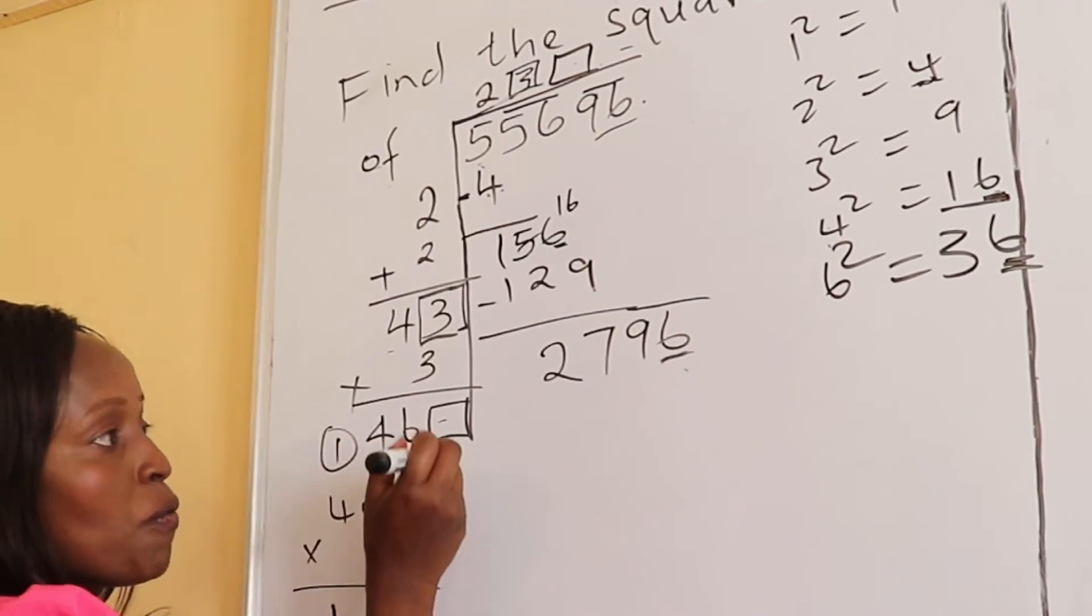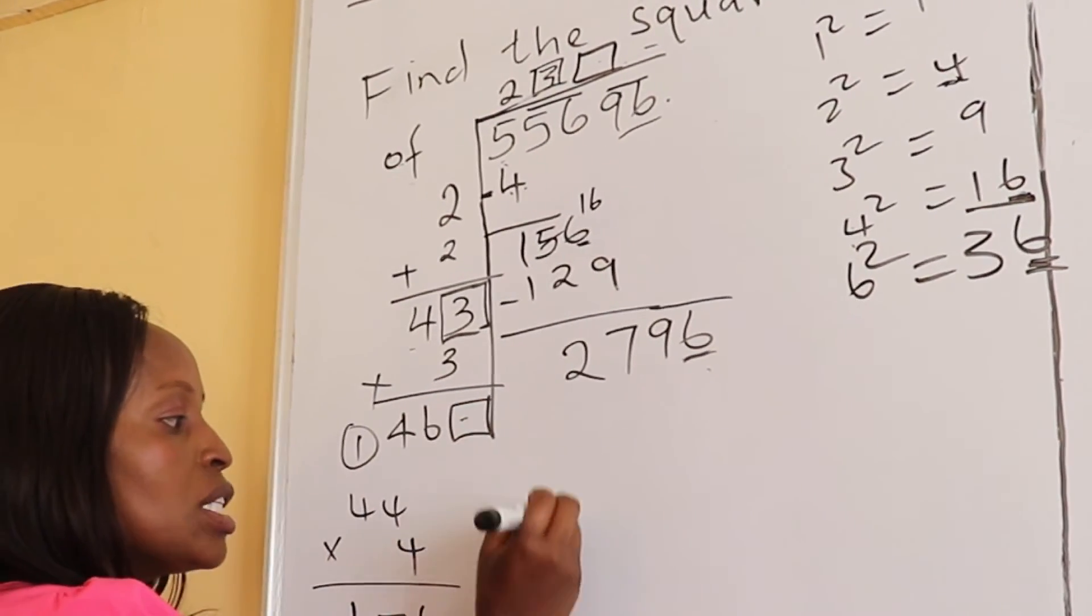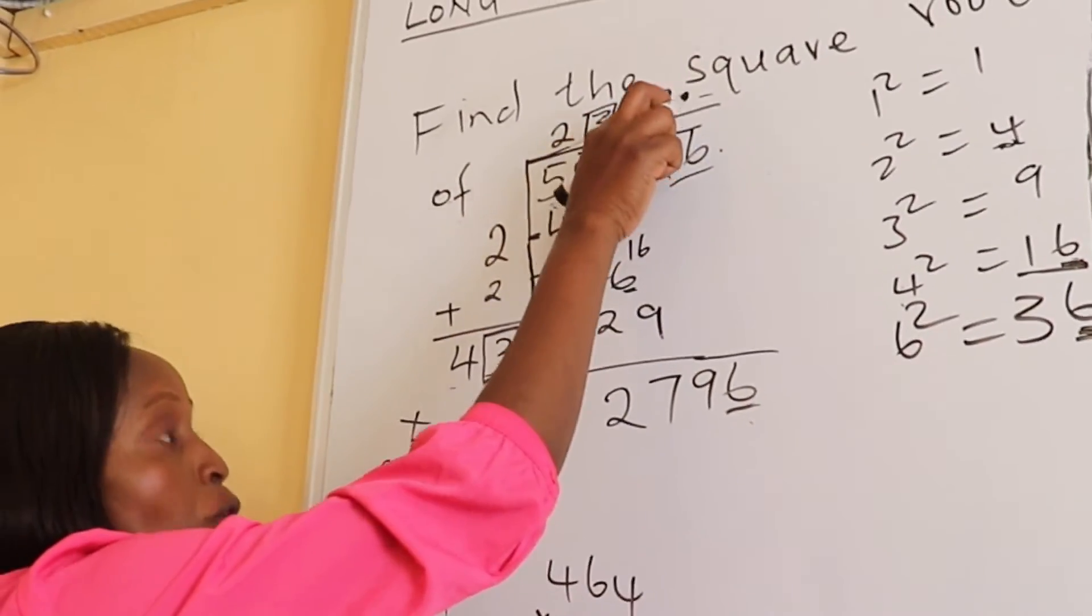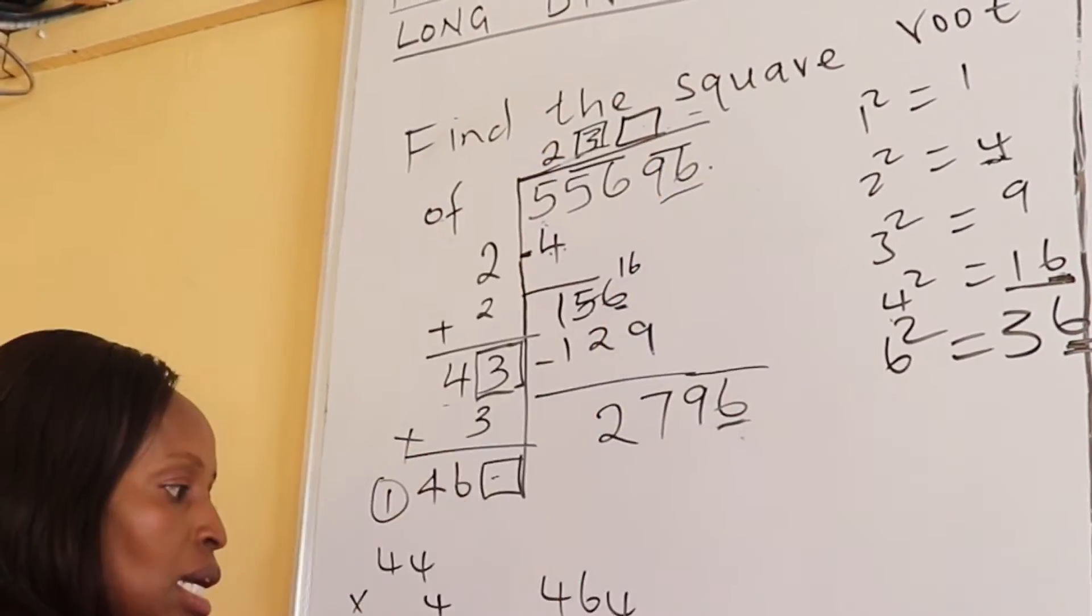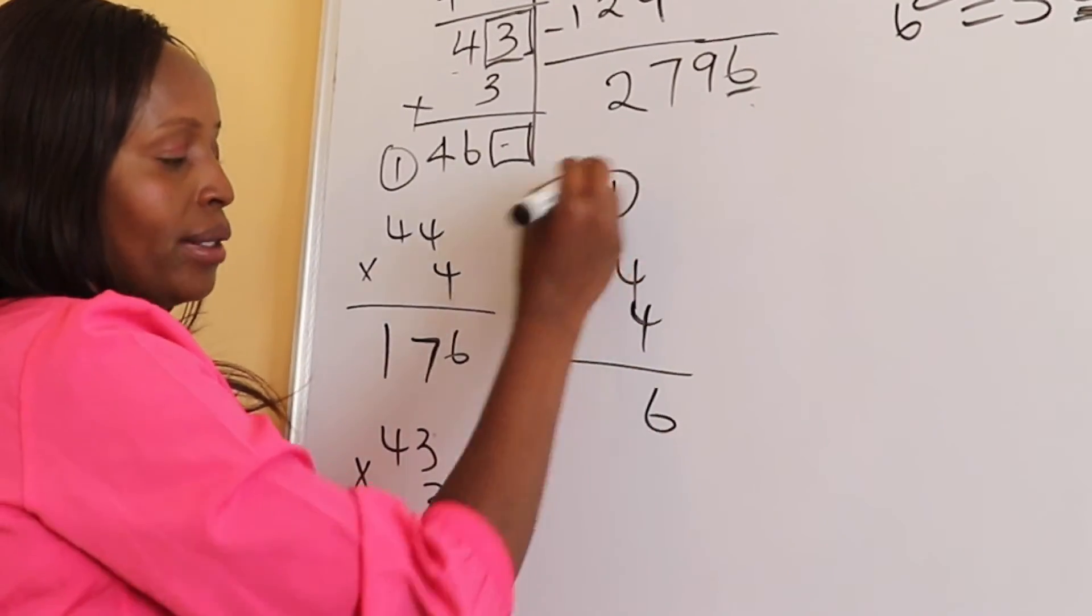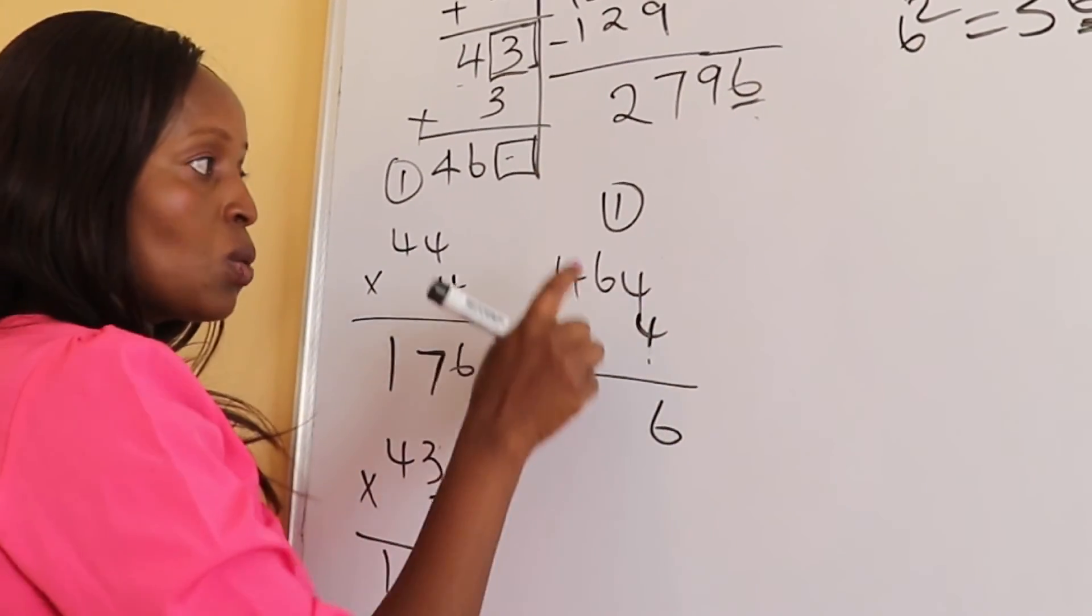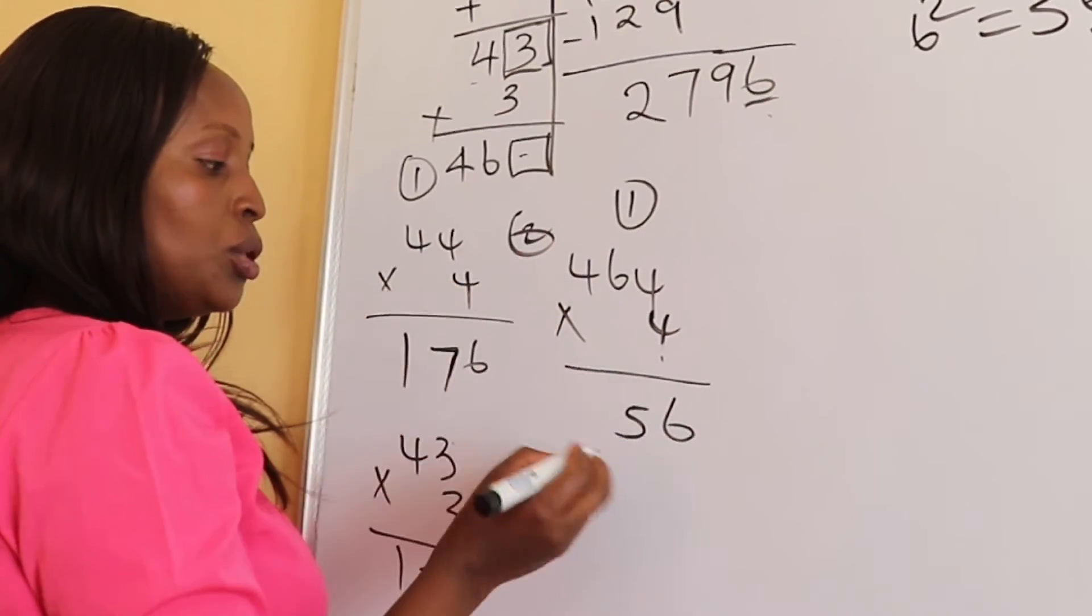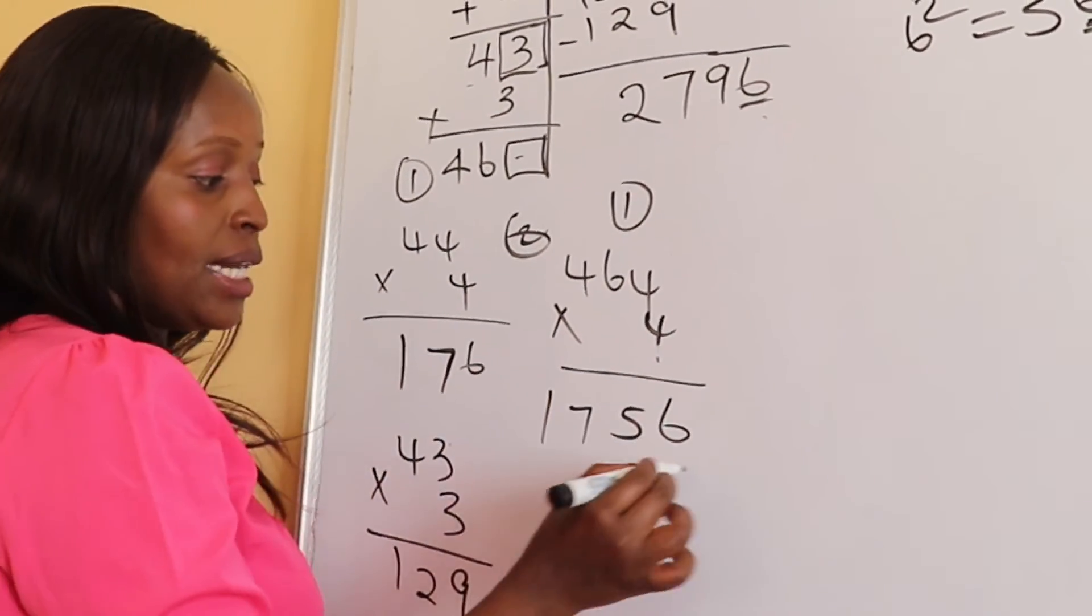Let's try to put 4 here. It will be 464 times 4. 4 times 4 is 16 carry 1, 4 times 6 is 24 plus 1 is 25, 4 times 4 is 16 plus 2 is 18. This number is lower than this.